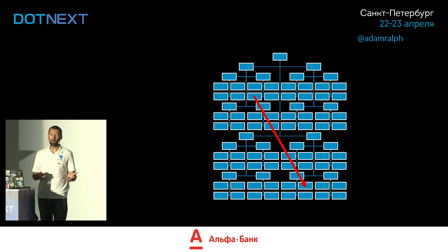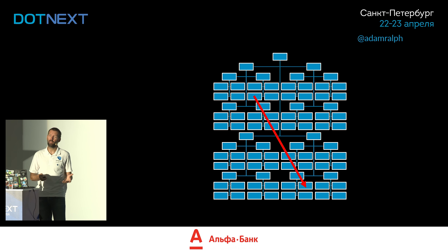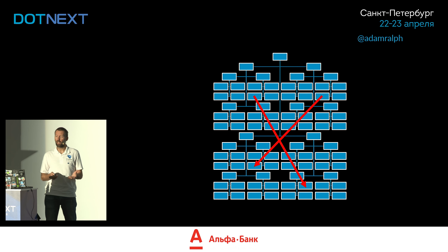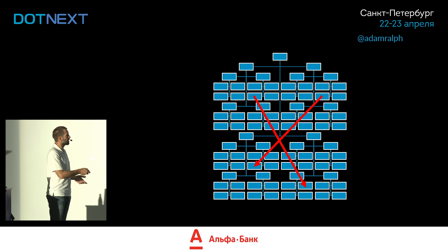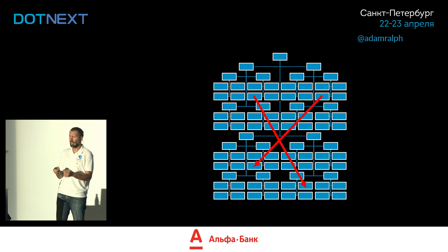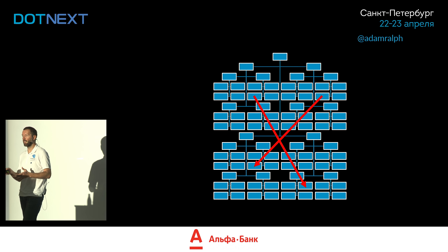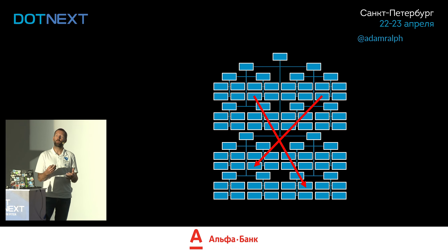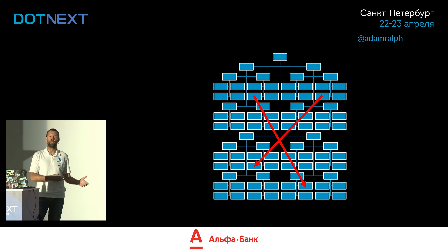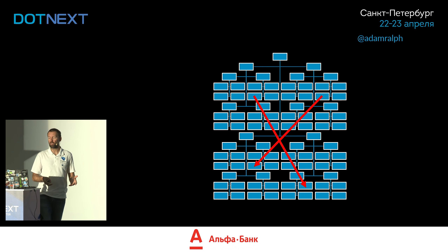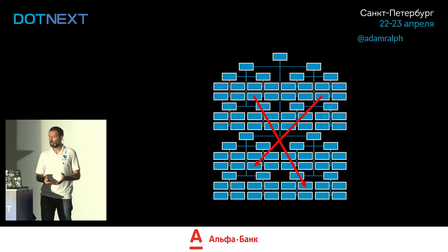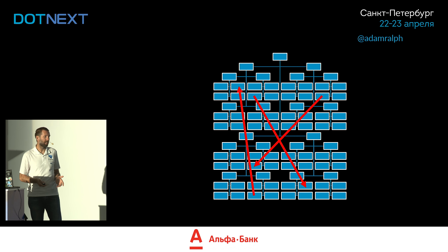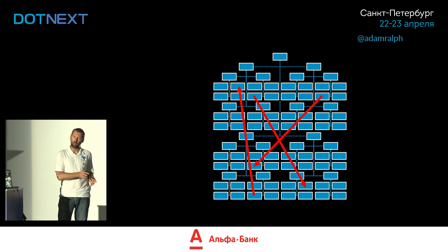Sooner or later they come along with another requirement and you find you have to do the same thing — call from this class down to this class. But you look at what you did last time and think, well, that worked, that didn't cause any problems. So you make that call again, roll it to production, and everything's fine. Sooner or later you do the same thing again, and you can kind of see where this is going.